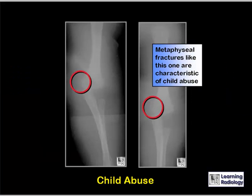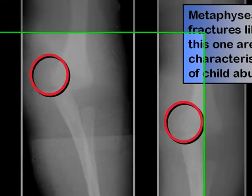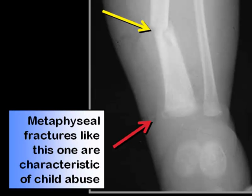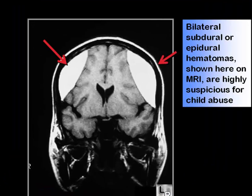Another finding seen in child abuse is small metaphyseal fracture fragments, like the ones shown in these images of the distal humerus. In this child, there is a transverse fracture of the tibia, but there is also a metaphyseal corner fracture characteristic of child abuse. This MR of the brain shows bilateral epidural hematomas — bilateral subdural or epidural hematomas are highly suspicious for child abuse.